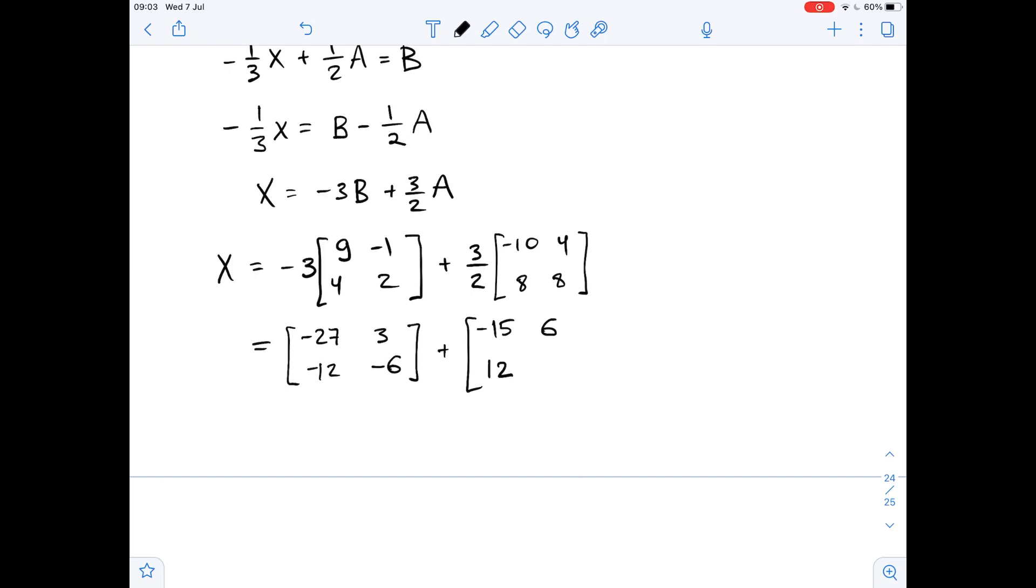And 24 over 2 so 12 again. Now we just add these matrices and we get that X equals negative 27 minus 15 which is negative 42. Then 3 plus 6 which is 9. Negative 12 plus 12 is 0 and negative 6 plus 12 is 6. So this is matrix X which we had to find. Thank you.